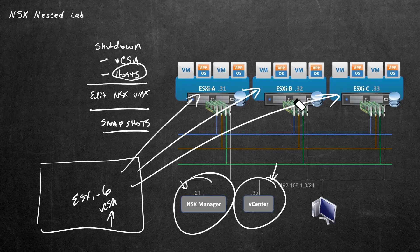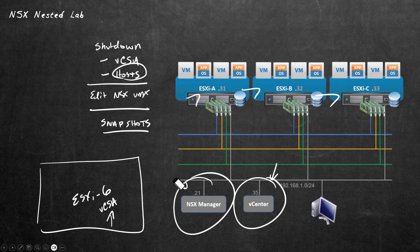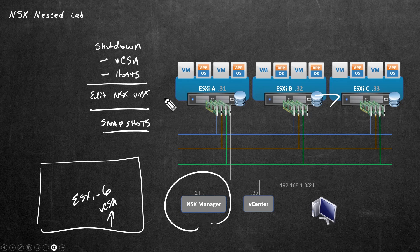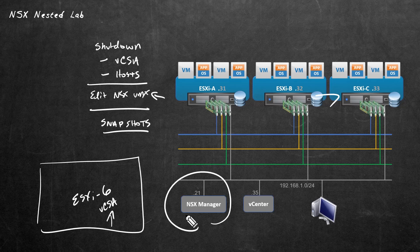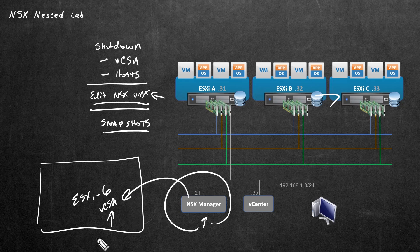Now that those three ESXi hosts are gracefully being shut down, our next step is to edit the VMX file for the NSX manager so that it allows snapshots — because by default, no snapshots are allowed. In a production environment, you're likely going to have a cluster of NSX managers communicating in real time, and snapshotting one then restoring it later would cause a problem. But in our lab environment with just one NSX manager, if we power it off, allow snapshots, and then use them, it won't cause a hiccup. So our next step is to edit the NSX VMX file for the recently deployed NSX manager over on the physical host.